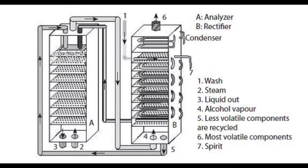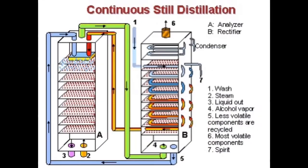The fermented liquid, or wash, enters from the top of the rectifier and gradually descends through it. By the time the wash reaches the bottom of the rectifier, it is almost at boiling point. It is then pumped into the analyzer, where it gradually makes its way downward through perforated plates and bubble caps. As it descends, it is met by a current of raw steam injected under pressure into the bottom of the analyzer.